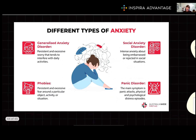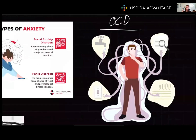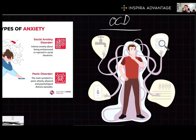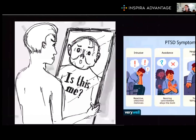Let's take a look at OCD. This is characterized by obsessions, which are persistent and intrusive thoughts, and compulsions, which are repetitive tasks that relieve tension but impair daily life. For example, a compulsion could be washing your hands 50 times before leaving the house. This takes a lot of time and makes it tough to live your life, but it does relieve mental tension for a person with OCD.